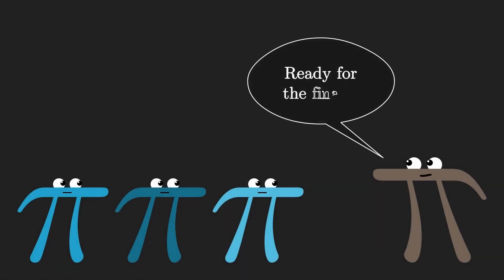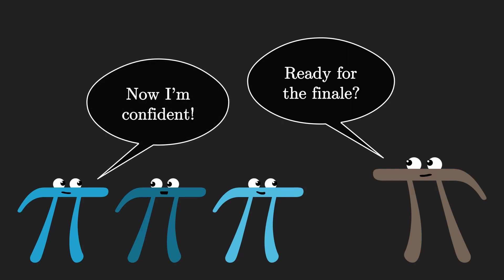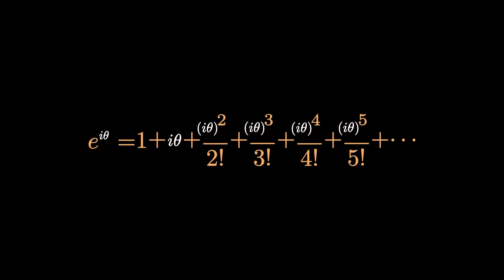So, my dear friends, are you ready for the grand finale where we will prove Euler's formula? I'm sure you are. Alright, so let's start with the Maclaurin series for e^x. And let's replace x by iθ. Let's do it for the right hand side as well.